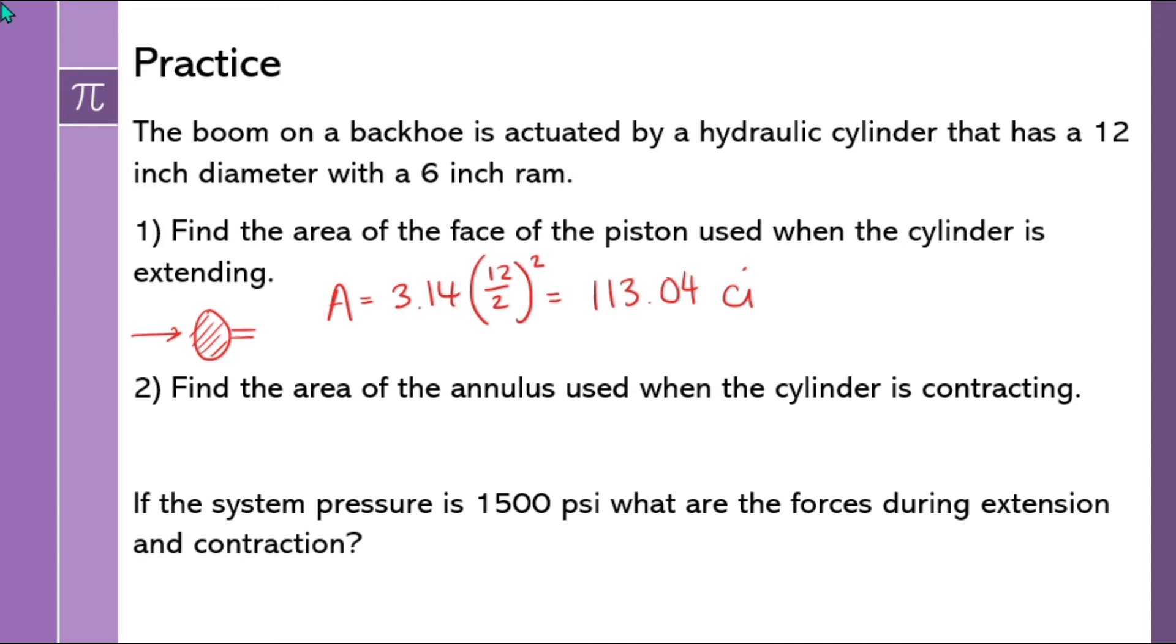Now, the area of the annulus is used when the cylinder is contracting. So we're in this situation. We're going to be pushing on this side. So we've got to subtract that ram area. We've already got the full area, so I just need to find the area of the ram by using 3.14, the ram diameter divided by 2 squared, and I get 28.26 cubic inches. So the annulus, that washer shape, the shaded area, is going to be 113.04 subtract the ram area, and it's going to give us 84.78 cubic inches.